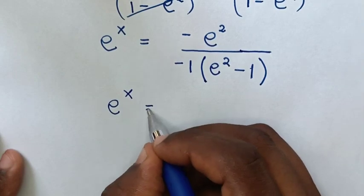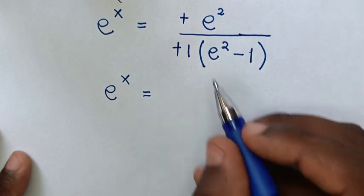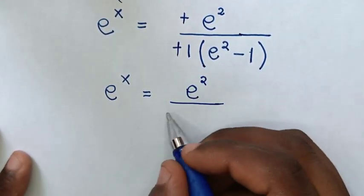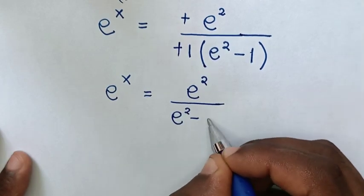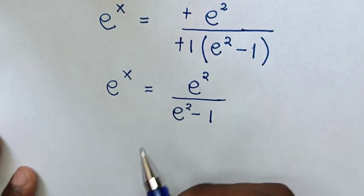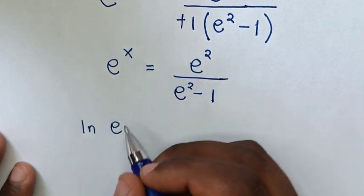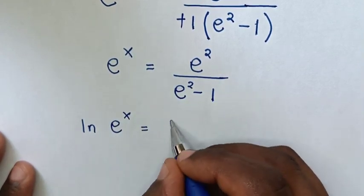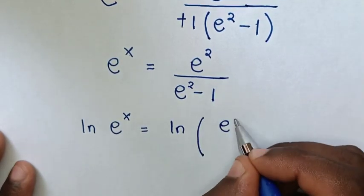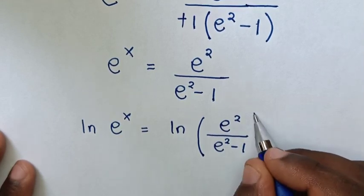Our equation becomes e power of x equal to e power of 2 over e power of 2 minus 1. To find the value of x, we apply ln to both sides, giving ln e power of x equal to ln of e power of 2 over e power of 2 minus 1, in bracket.